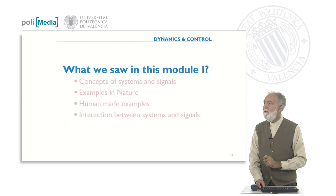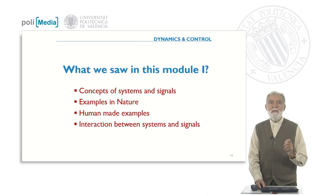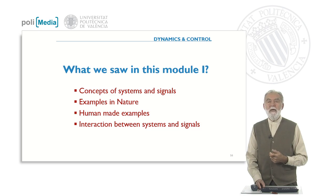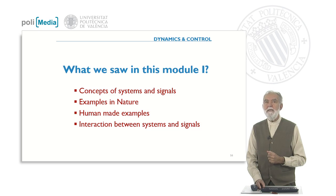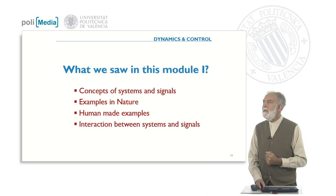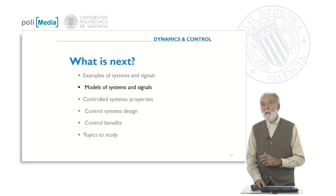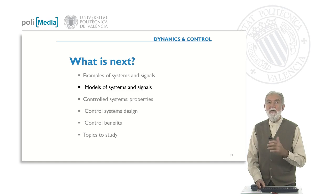To summarize, we have seen the concept of systems and signals. We saw some examples of signals and the interaction between systems and signals. What is next is the way we can model, store, and handle the system.